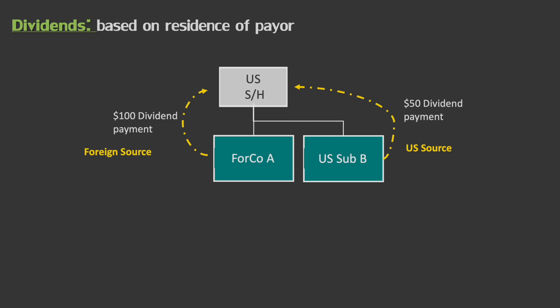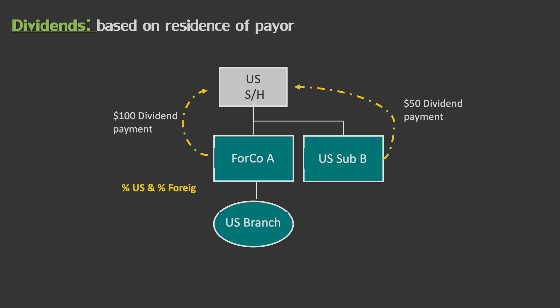However, let's also say foreign company A has a U.S. branch. In this instance, the dividend for foreign company A would actually be partially sourced U.S. and partially sourced based on the foreign branch and the underlying activities of that entity.